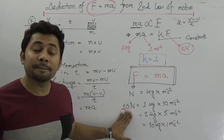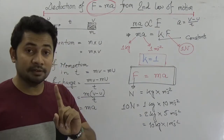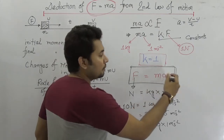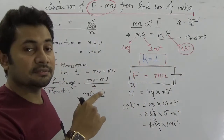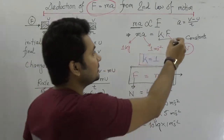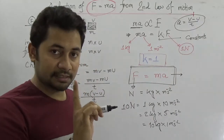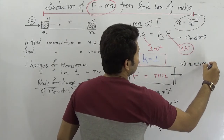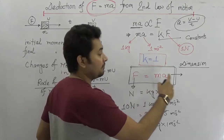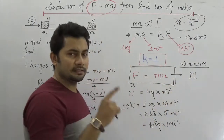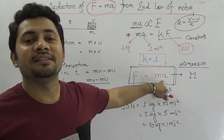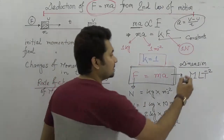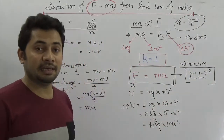If we need to know the dimension of force, we know this is the product of M and A — mass into acceleration. Acceleration is the rate of change of velocity. The dimension of mass is capital M, and the dimension of acceleration is LT⁻². Hence, the dimension of force is MLT⁻².